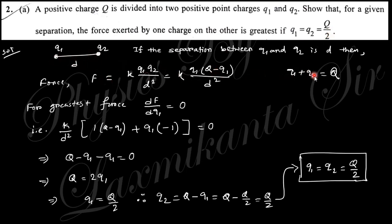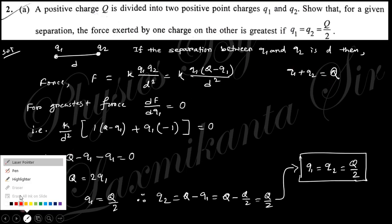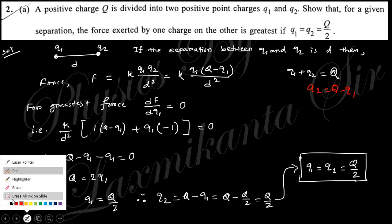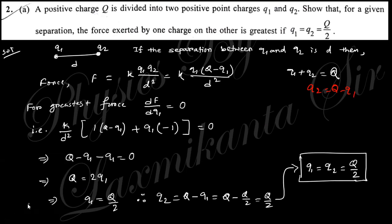Here q2 is nothing but Q minus q1. If you substitute this value, at the greatest value the first derivative will be zero. Taking the first derivative with respect to q1 and setting it to zero gives q1 equal to q2 equals Q over 2. You also need to find the second derivative to confirm this is a maximum.